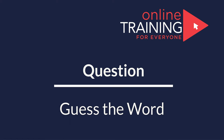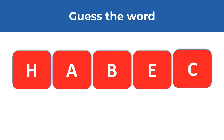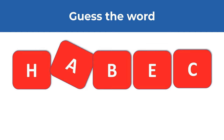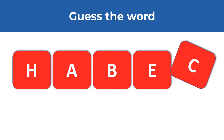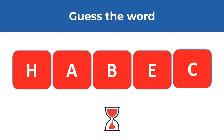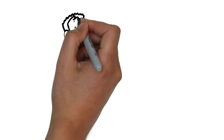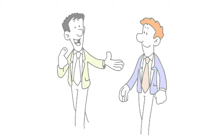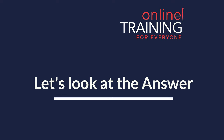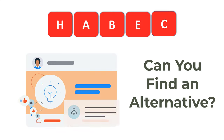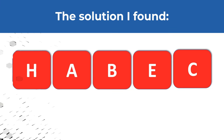Here's an interesting question from a recent test. You need to figure out a word from five letters: H, A, B, E, and C. Give yourself 10 to 20 seconds — you can pause the video to figure it out on your own. Make sure to use all the letters, each only once. Keep in mind that multiple words can sometimes be formed. The solution I found is the word 'beach': B-E-A-C-H.